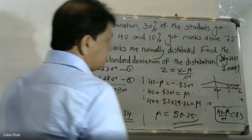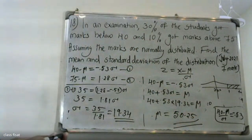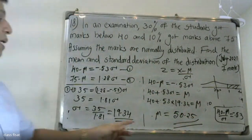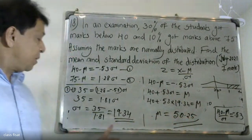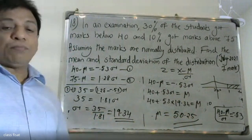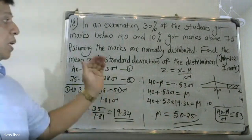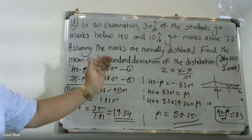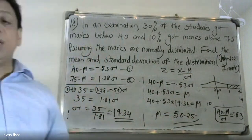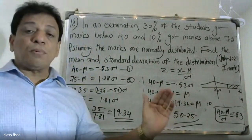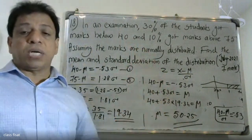So the mean and standard deviation of the distribution are: mean equals 50.25 and standard deviation equals 19.34.